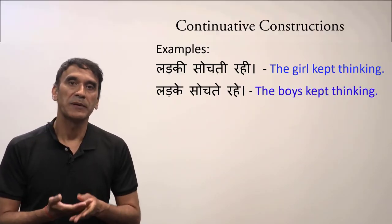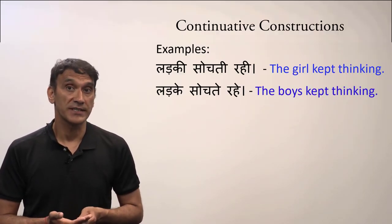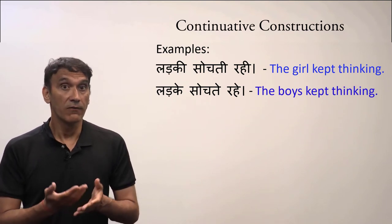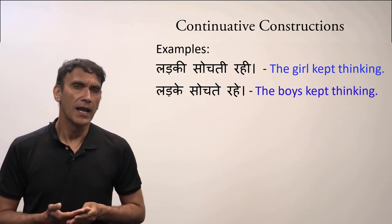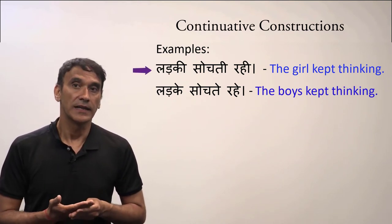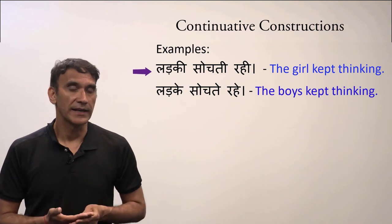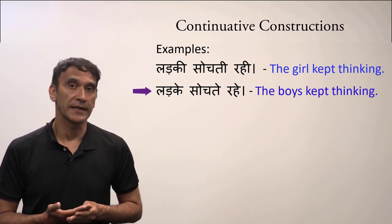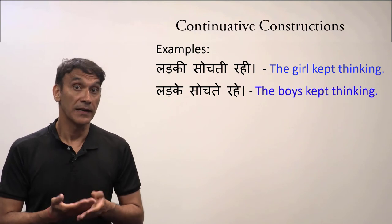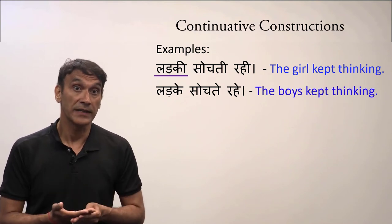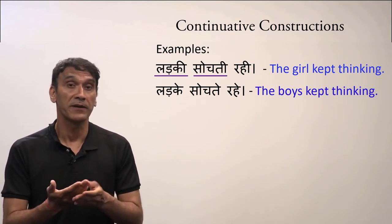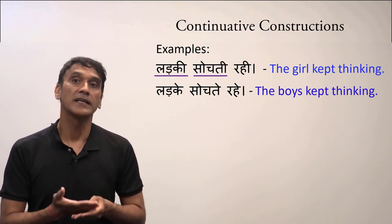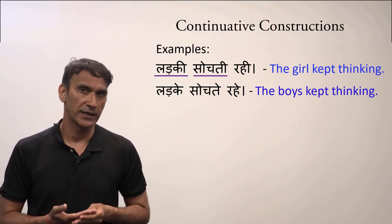Keep in mind that the habitual participle changes according to the number and gender of the subject. For example: 'LADKI SOCHTI RAHI' — the girl kept thinking. In this example, LADKI is feminine, so the habitual participle takes the feminine form: SOCHTI. LADKI SOCHTI RAHI — the girl kept thinking.